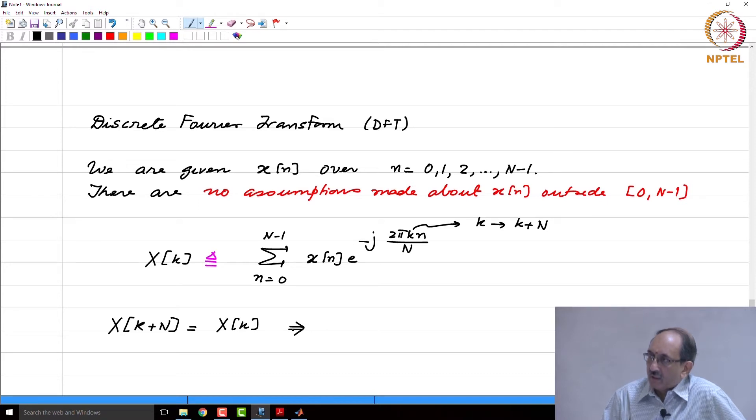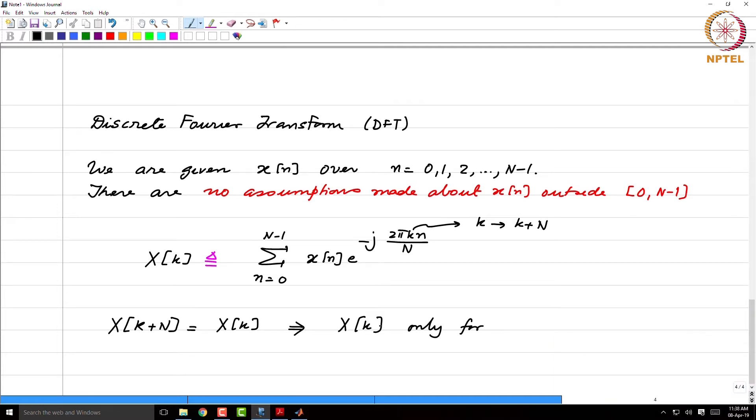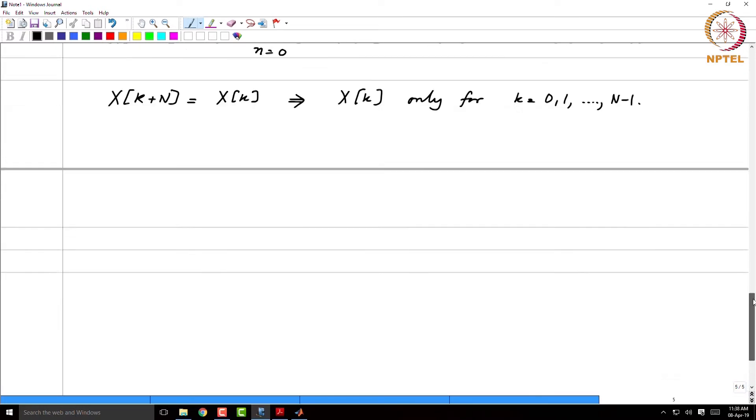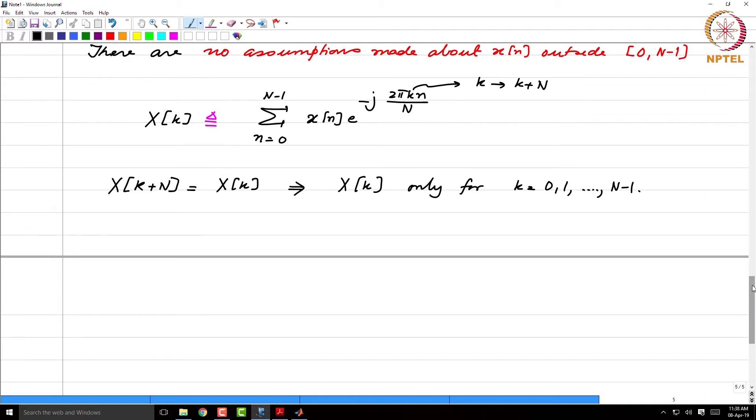So this immediately tells you, you need to be worried about X(k) only for what values of k? 0 to N minus 1, because X(k) is periodic with period cap N. Therefore, you need to worry about X(k) only for k values in the range 0 to N minus 1. So this is one immediate fallout of this.